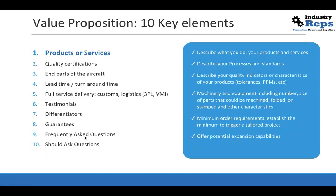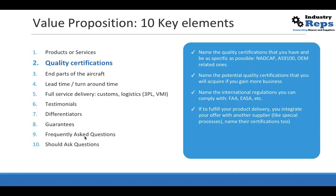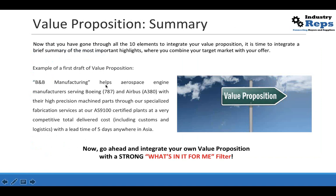Here's an example: 'B&B Manufacturing helps aerospace engine manufacturers serving Boeing 787 and Airbus A380 with high-precision machine parts through our specialized fabrication services, AS9100-certified plants, at a very competitive total delivered cost including customs and logistics, with a lead time of five days anywhere in Asia.' If you notice, all 10 elements are somehow embedded in this single paragraph. The most important thing is the value proposition is filtered by the 'what's in it for me' filter — that's all the client wants to hear.